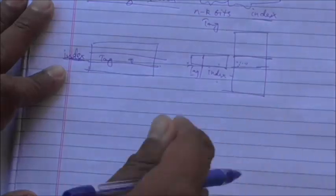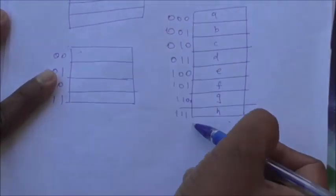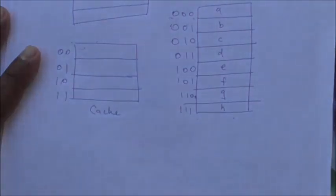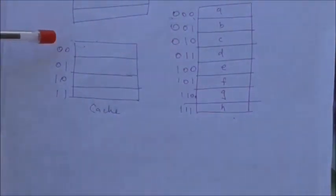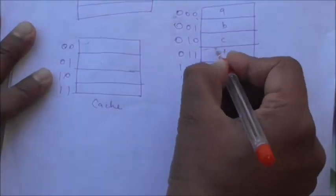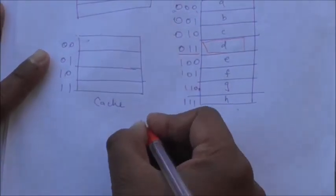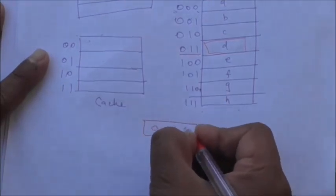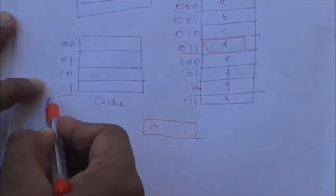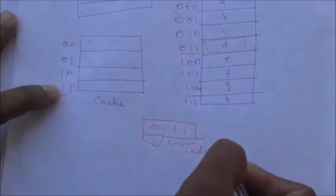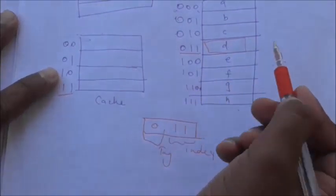For example, the main memory can store 8 words so the address is 3 bits, and the cache memory has only 4 words so the address is 2 bits. Suppose data item D is to be transferred to cache — its address is 0 1 1. Since cache addresses are 2 bits, the rightmost two bits form the index and the leftmost remaining bit forms the tag.